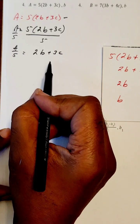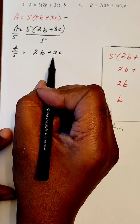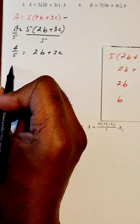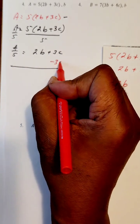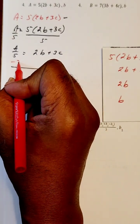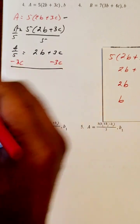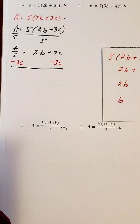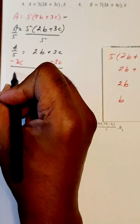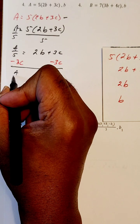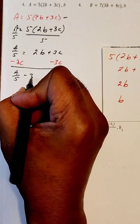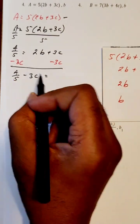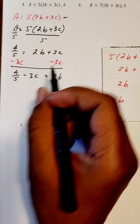Next we're going to get rid of the 3C. The 3C is adding, so we're going to use a subtracting 3C on both sides. So subtracting 3C here and subtracting 3C here. What we end up with — we'll put these next to each other — we have A over 5 and a minus 3C. What's left over here is a 2B.